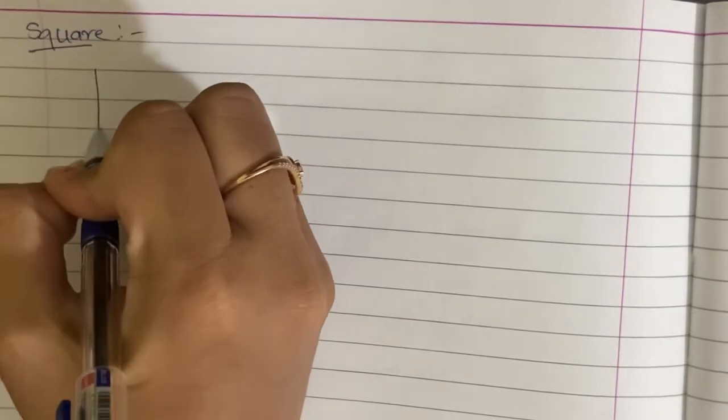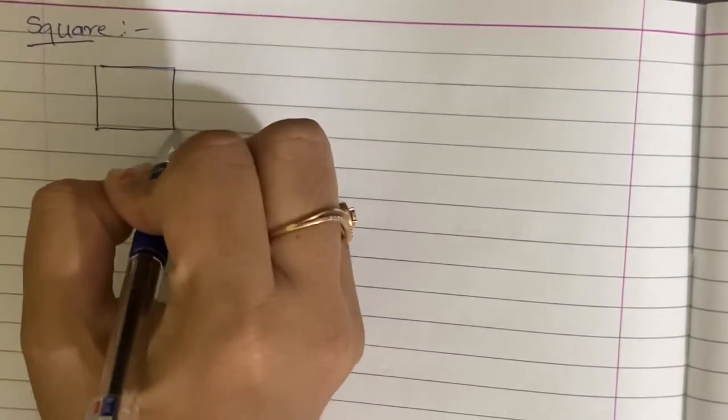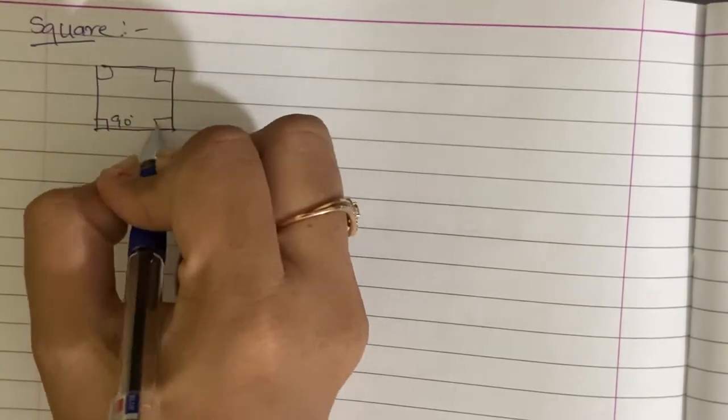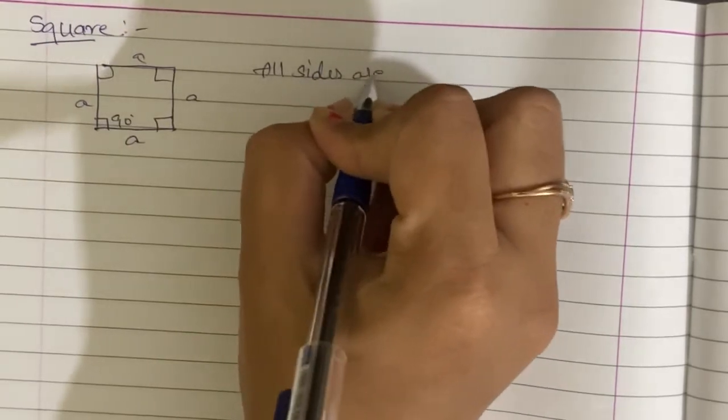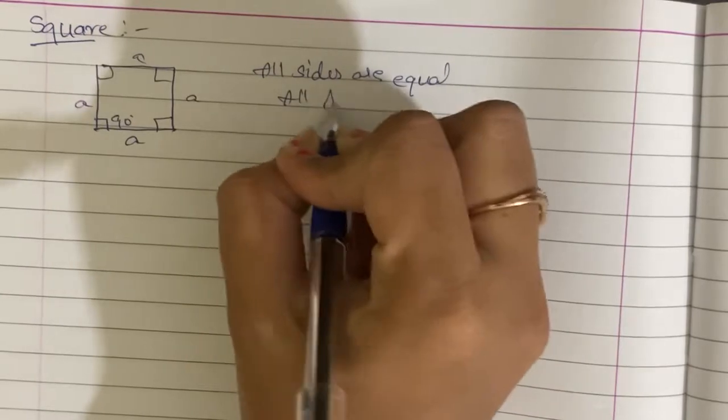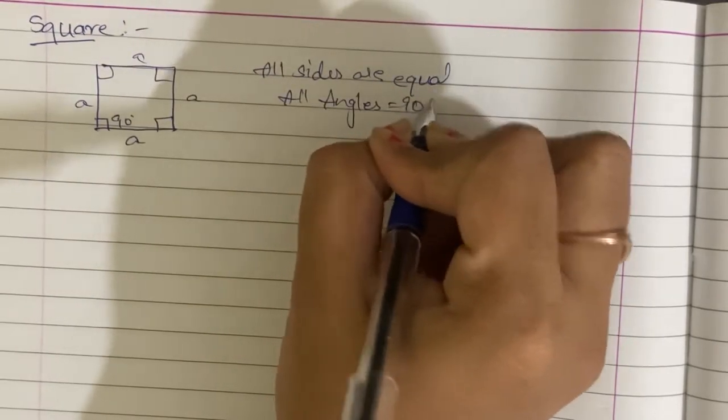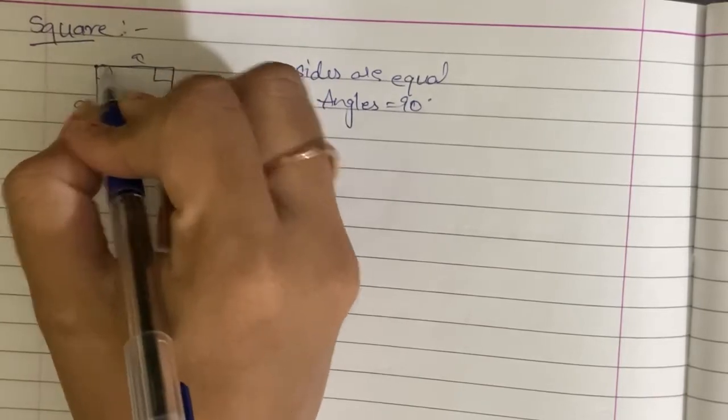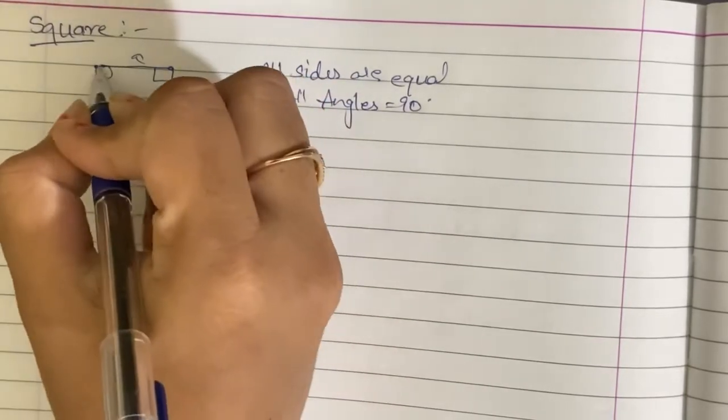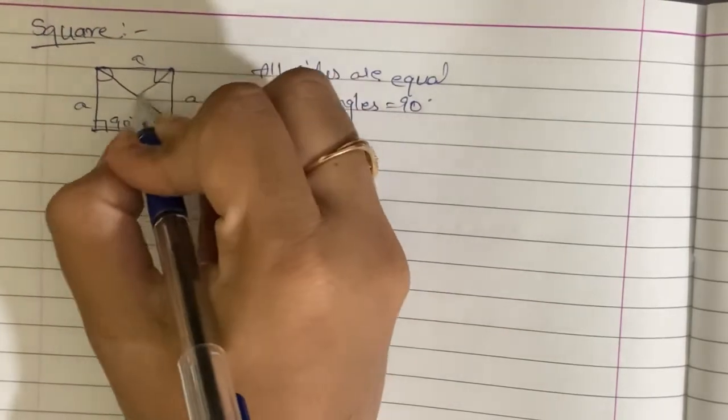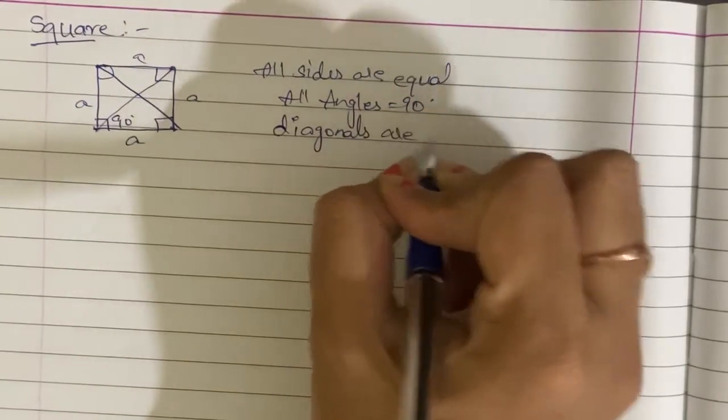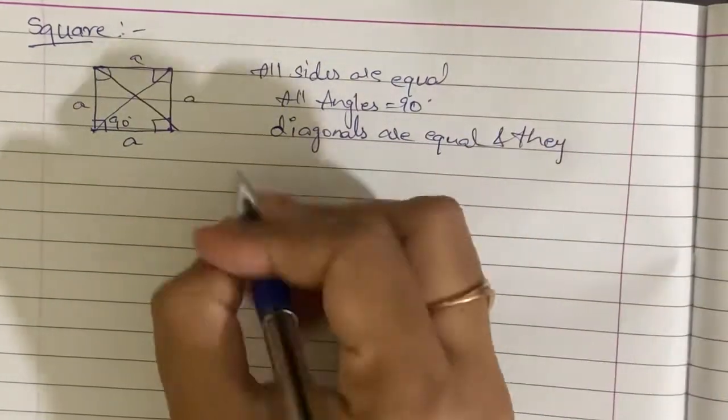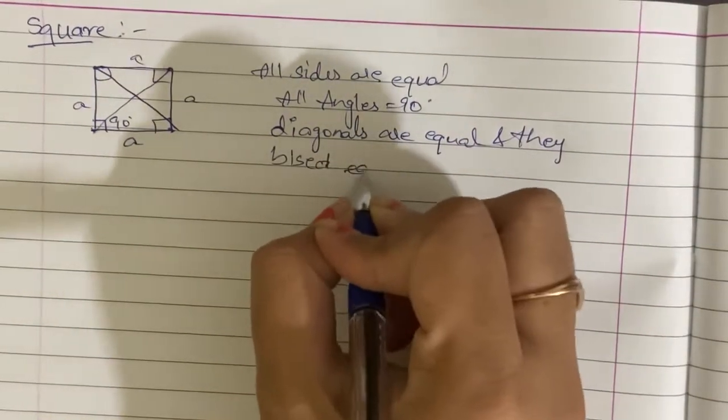We are going to learn the square. Four lines form a square. All angles are 90 degrees. All sides are equal. All angles is equal to 90 degrees. The diagonals are equal, and they bisect each other.